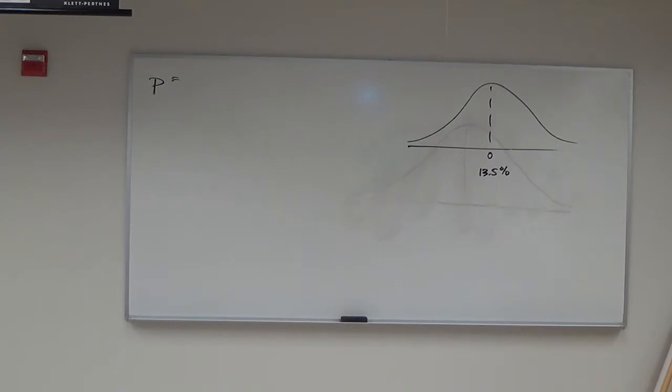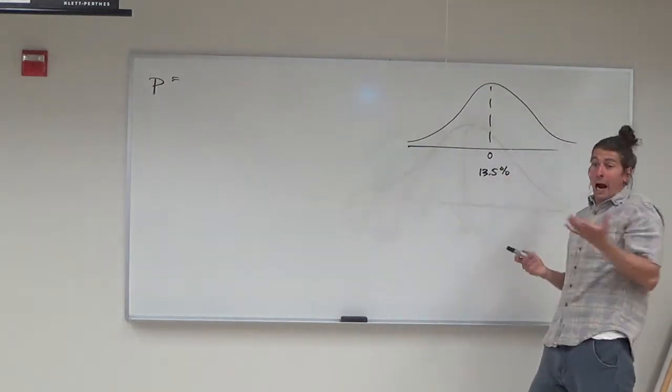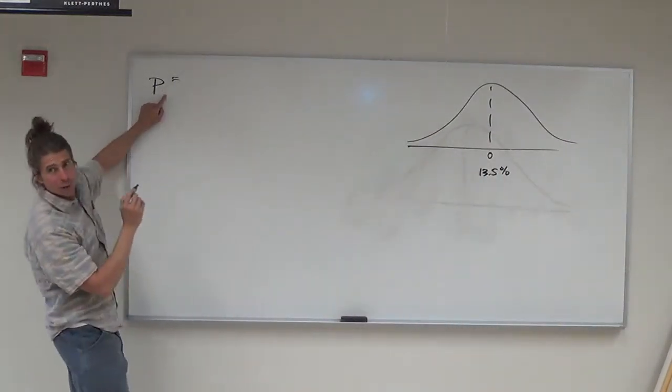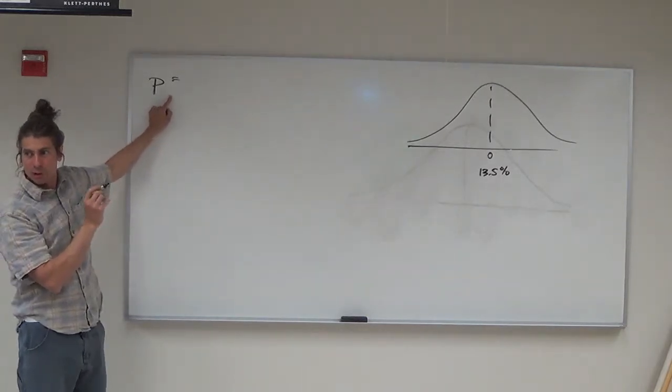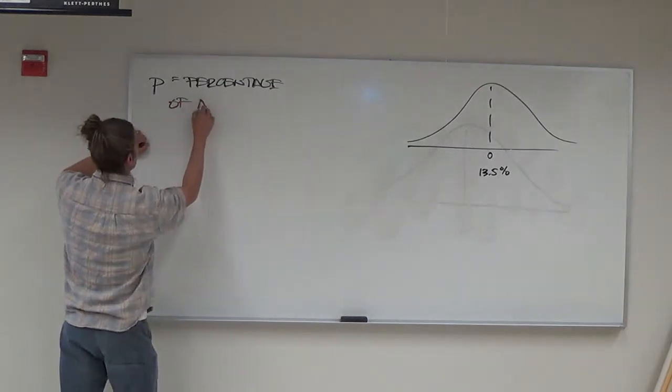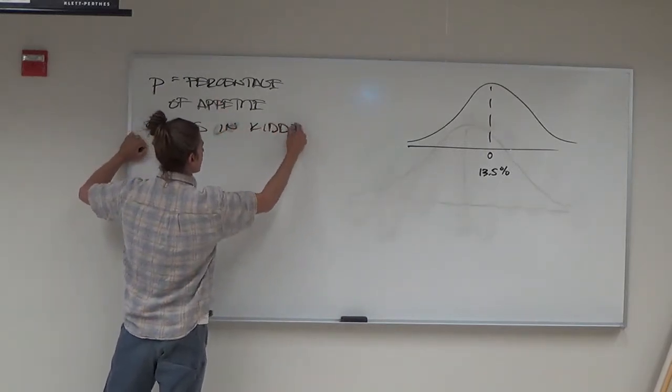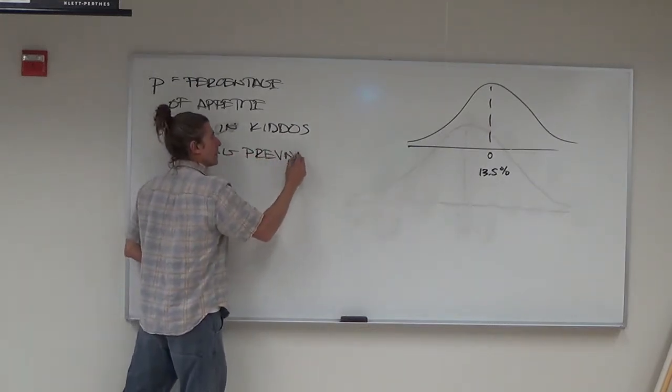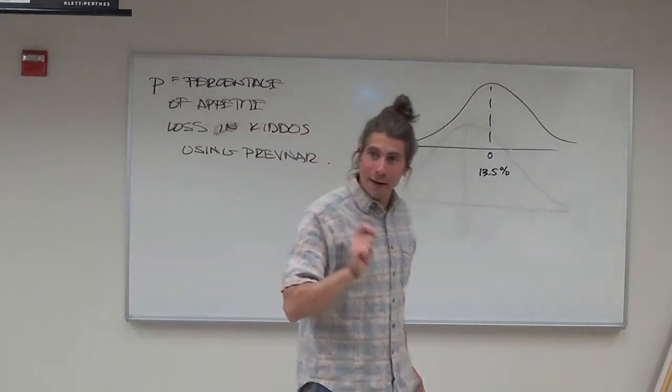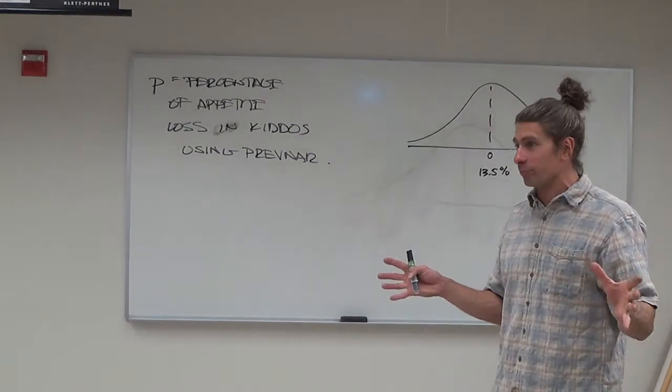A student asks why they're using Prevnar when looking at the null curve. The instructor explains they're comparing Prevnar to that curve to see if Prevnar lives on that curve or off the curve. The curve represents competing medicines at 13.5% appetite loss. They want to determine if Prevnar has the same rate of appetite loss or if it's way lower or way higher.